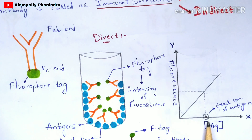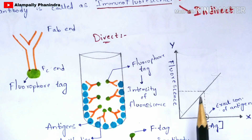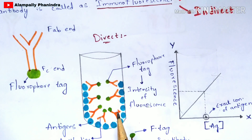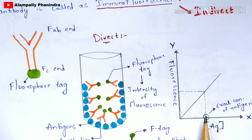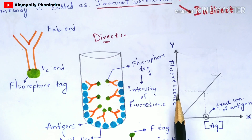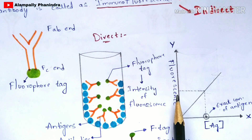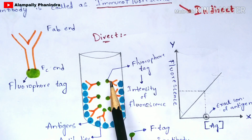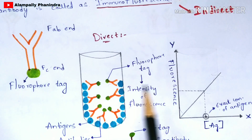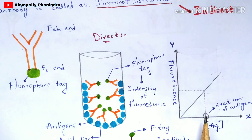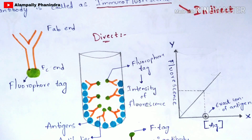The antigen concentrations placed in the test tube are noted on the x-axis. When you take the known concentrations of antigen, the standard curve is obtained. Once you take the unknown concentration of antigen, you extrapolate that graph, and the exact concentration of the antigen is determined from the fluorescence intensity value obtained by the spectrophotometer. This is the direct method of immunofluorescence.